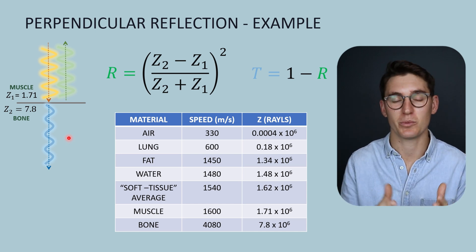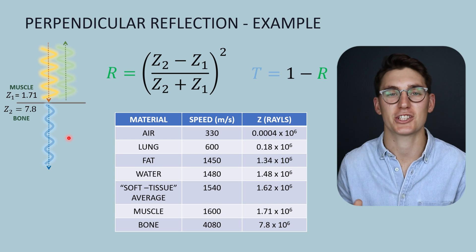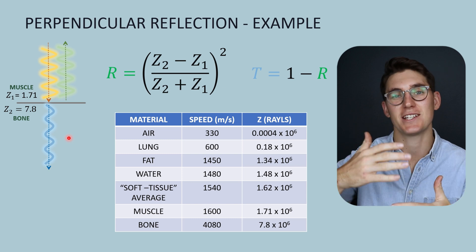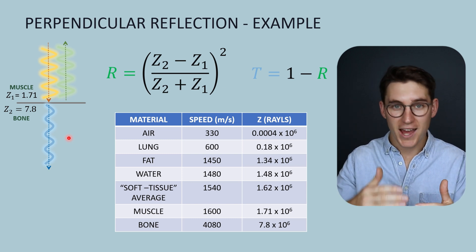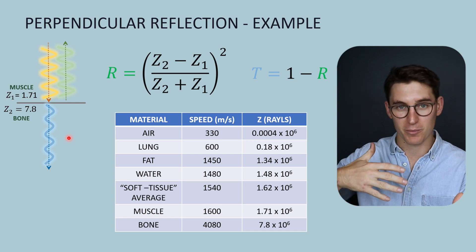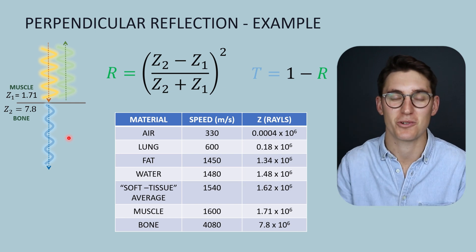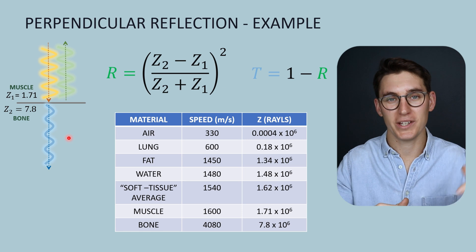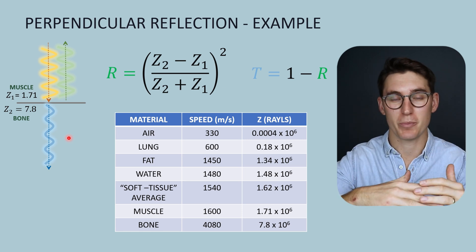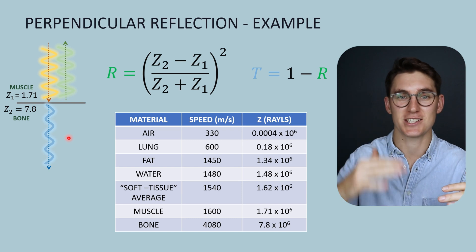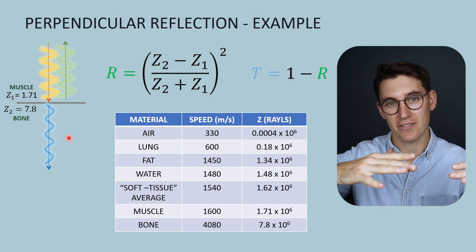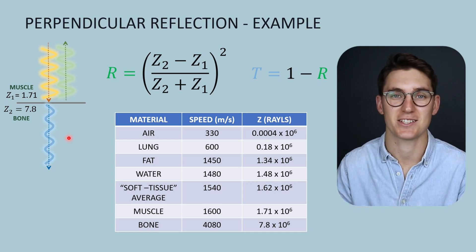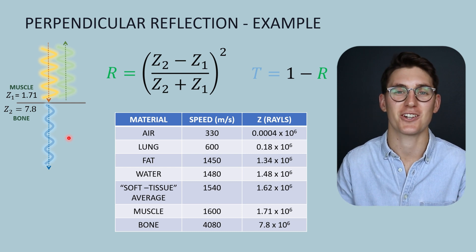So now we've looked at reflection: perpendicular reflection, specular reflection, and non-specular diffuse reflection. We've seen how differences in acoustic impedance values determine how much of an ultrasound wave is returned to us and how much is transmitted through in a perpendicular reflector. In our next talk, we're going to look at the concept of refraction of ultrasound waves — where an incident wave hits a tissue boundary at an angle and, due to differences in speed between the two tissues, changes direction slightly, producing a transmission angle as it heads into the second tissue.